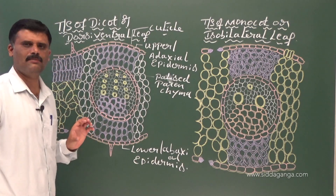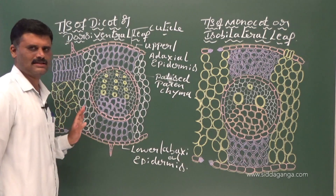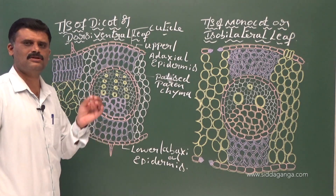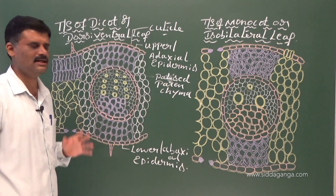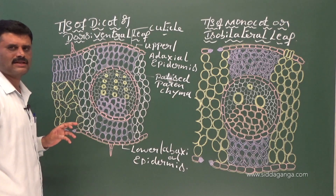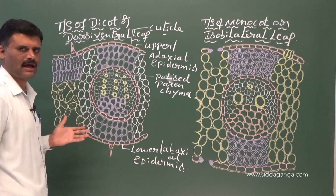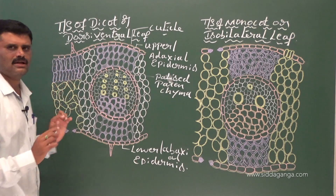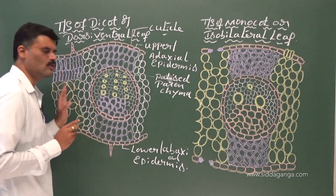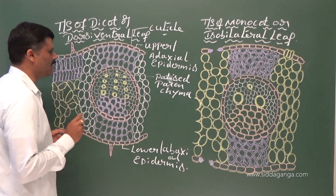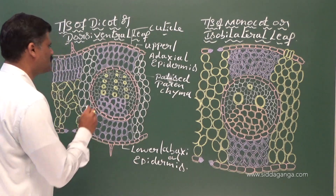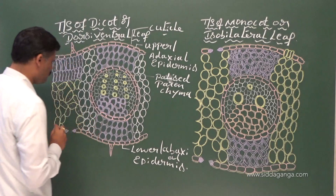Palisade parenchyma is nothing but chlorenchyma cells. The mesophyll region is filled with chlorenchyma cells. Chlorenchyma means specialized parenchyma cells which contain chloroplast. The elongated palisade parenchyma cells contain chloroplast; these are pillar-like elongated cells that are closely packed and contain a dense, large number of chloroplasts. So it is called palisade parenchyma.